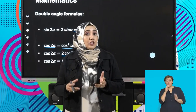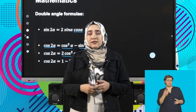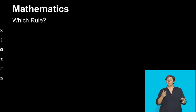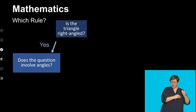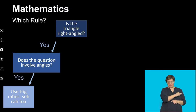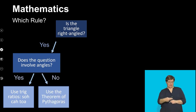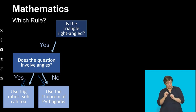Can you remember which rule to use when? We've done this in previous lessons — let's do a quick recap. If the triangle is right-angled and involves angles, we use trig ratios: sine, cos, and tan. If it only involves sides, we use the theorem of Pythagoras. So if there are angles, we use SOHCAHTOA; if there are no angles, we use Pythagoras.